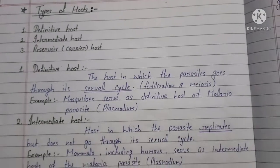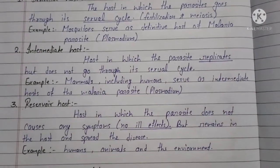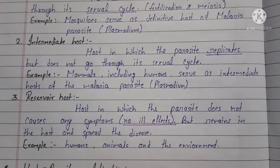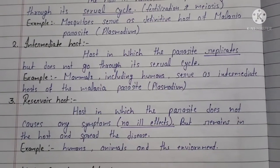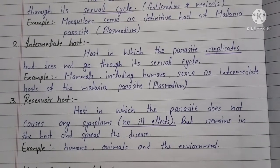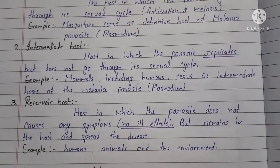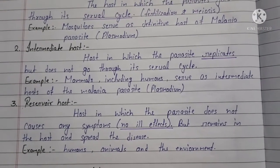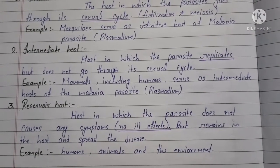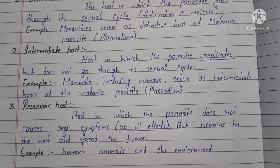Second, intermediate host: the host in which the parasite replicates but does not go through its sexual cycle. Example: mammals, including humans, serve as the intermediate host of the malaria parasite.